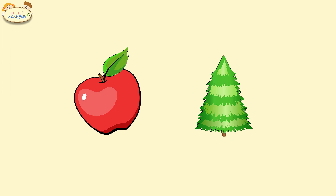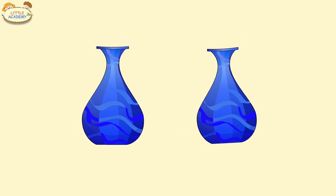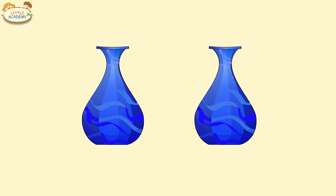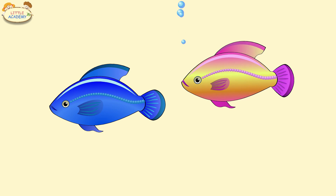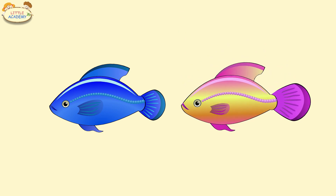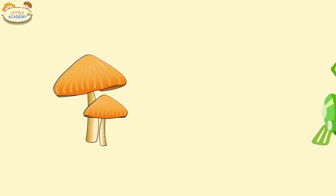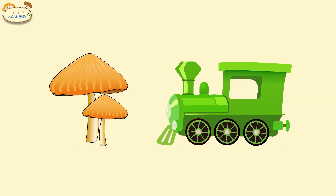Let's do it again. Here are blue vases — they are the same. Here are fish — they are similar. And here are mushrooms and a train — these objects are different.